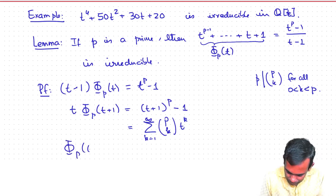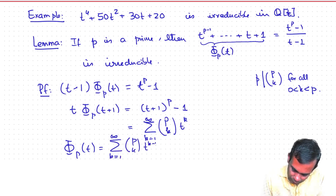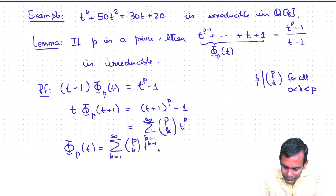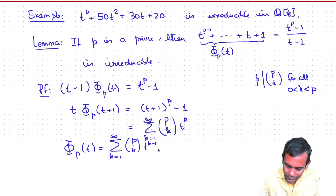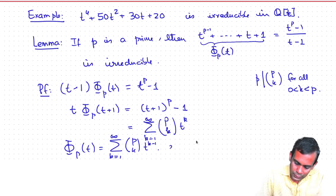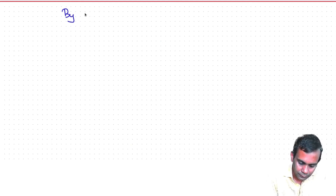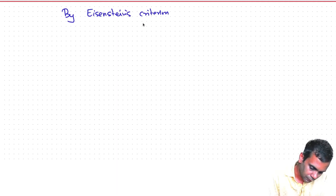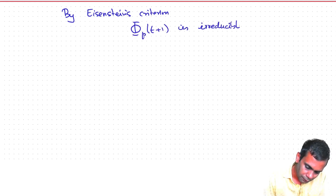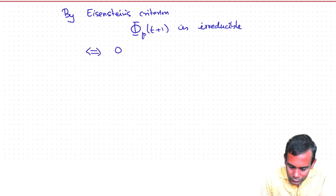So φ_p(t + 1) = Σₖ₌₁ᵖ (p choose k)·t^(k−1), which is a polynomial of degree p − 1. Its leading coefficient is 1, all remaining coefficients are divisible by p, and the constant term φ_p(1) equals p, which is not divisible by p². Hence by Eisenstein's criterion, φ_p(t + 1) is irreducible.